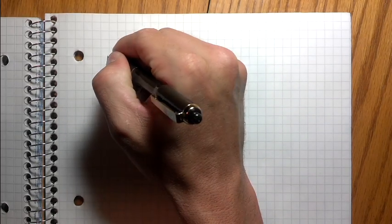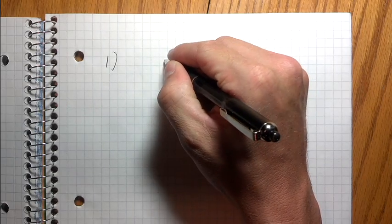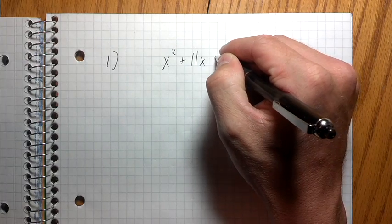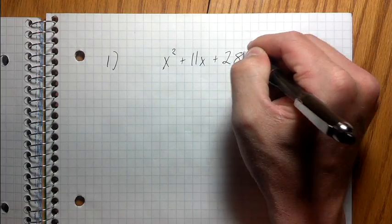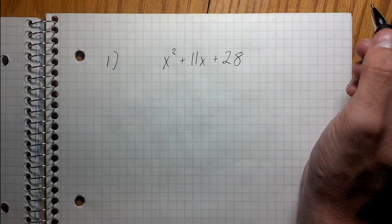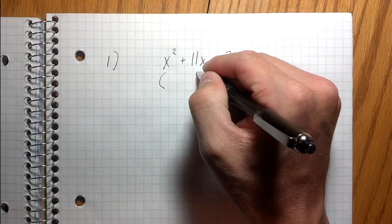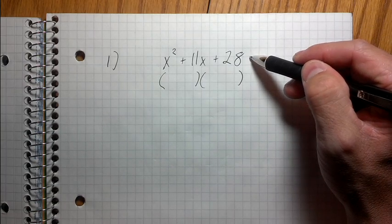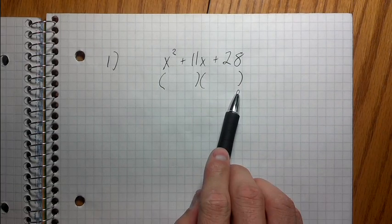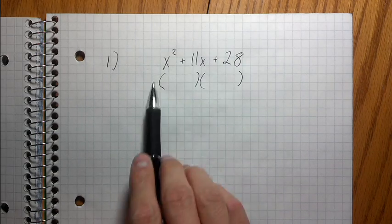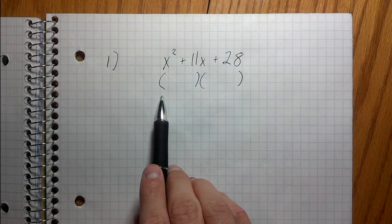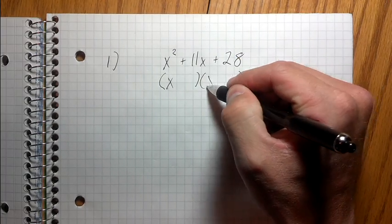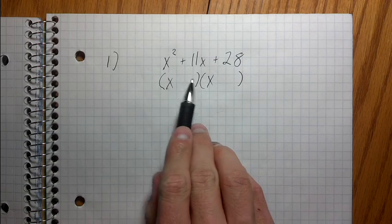So the first example looks like this: x squared plus 11x plus 28. The way to factor this is you first have to draw these sets of parentheses, because a trinomial is the product of two binomial factors, or a second degree polynomial is the product of two linear factors. The first step is to write my x here and my x here, because these are the factors of the first term.